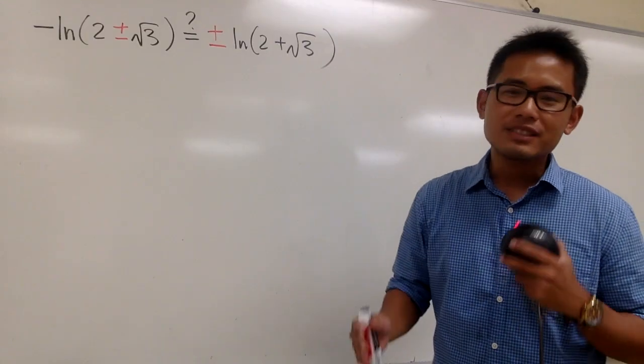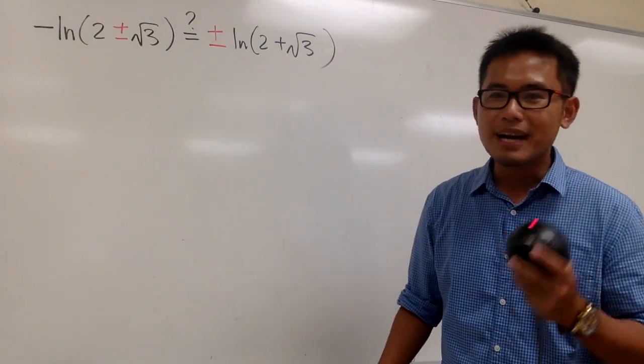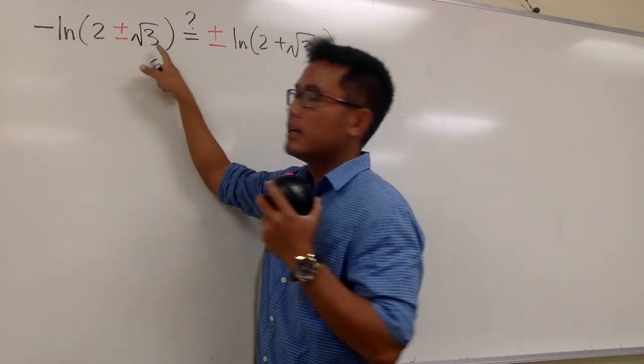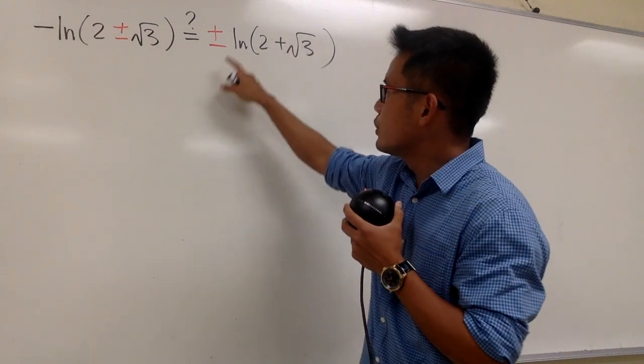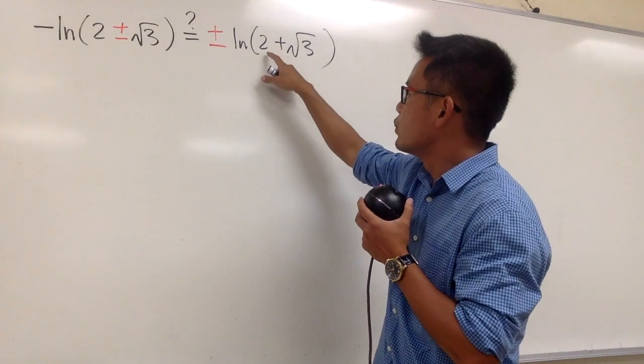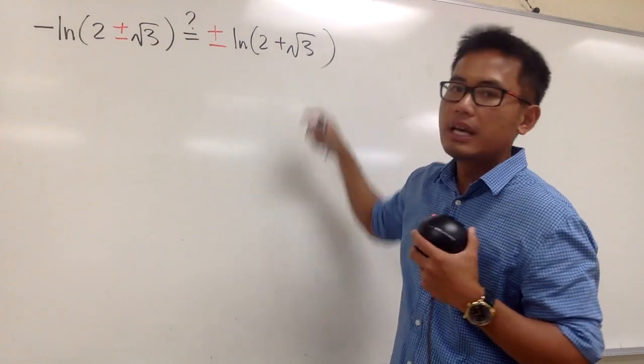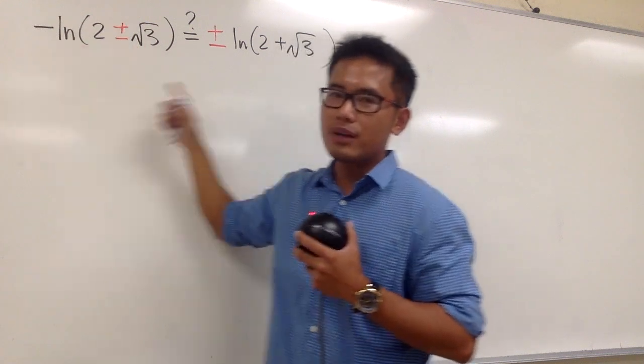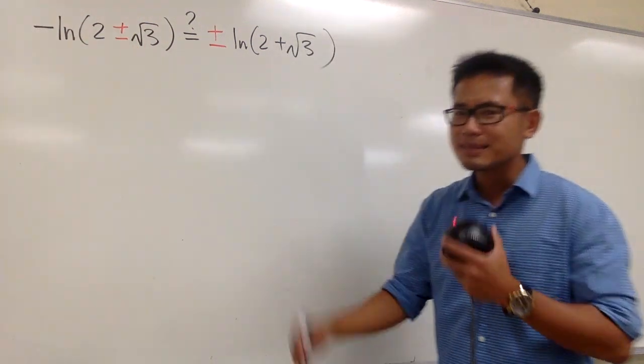Okay, so this is the question from the video where sine of C equals 2, right? The question is: how come negative ln of 2 plus minus square root of 3 equals plus minus ln of 2 plus square root of 3? It seems like I just factored out the plus minus to the front of the ln. How is that even possible?